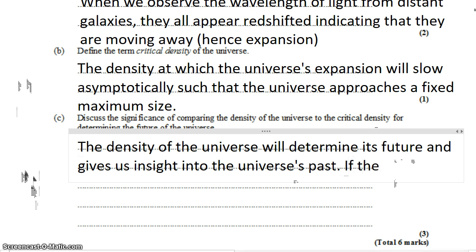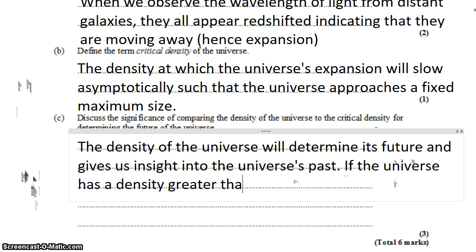If the universe has a density greater than the critical density, then the universe is going to come back together. It'll pull itself back into the opposite of a big bang, the big crunch.